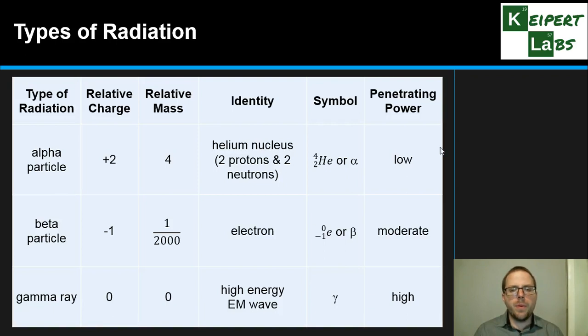When we're thinking about radiation, we're thinking about three main types. There are more that we've talked about more recently, but these are the three main ones. Alpha particles have a relative charge of plus two, which is essentially a helium nucleus, and have a low penetrating power.